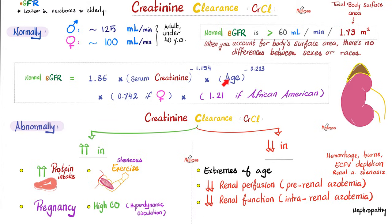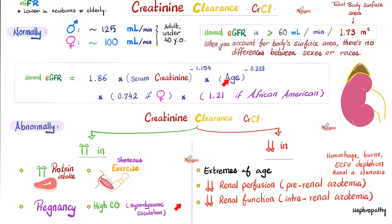Creatinine clearance is high in the following conditions: eating too much protein before the test, strenuous exercise before the test, pregnancy, or high cardiac output. High cardiac output means more blood reaches the kidney, so the kidney filters more — the GFR goes up and creatinine clearance also goes up. Why does it go up in pregnancy? Because pregnancy is a state of hyperdynamic circulation and cardiac output increases.